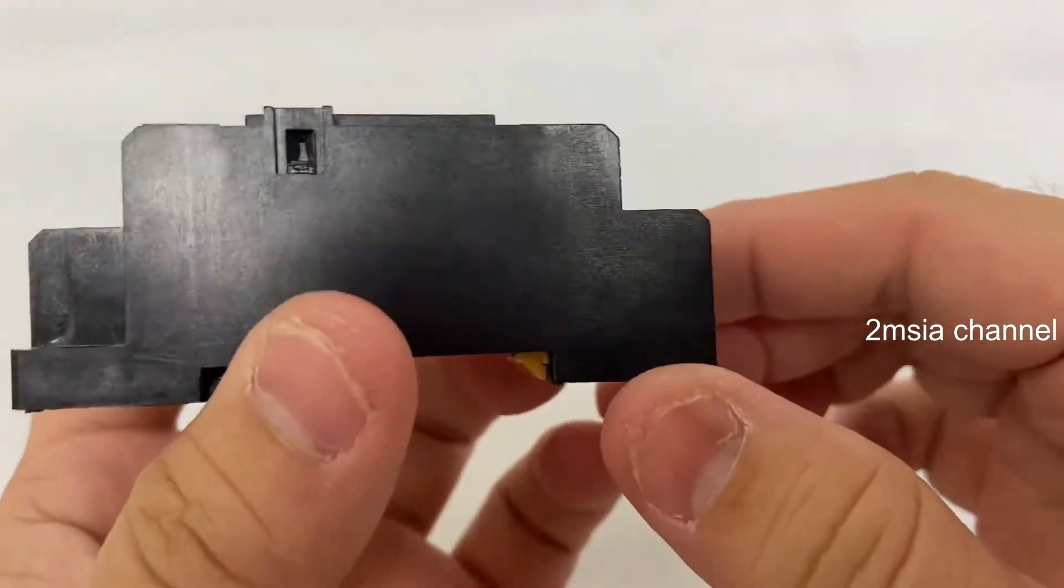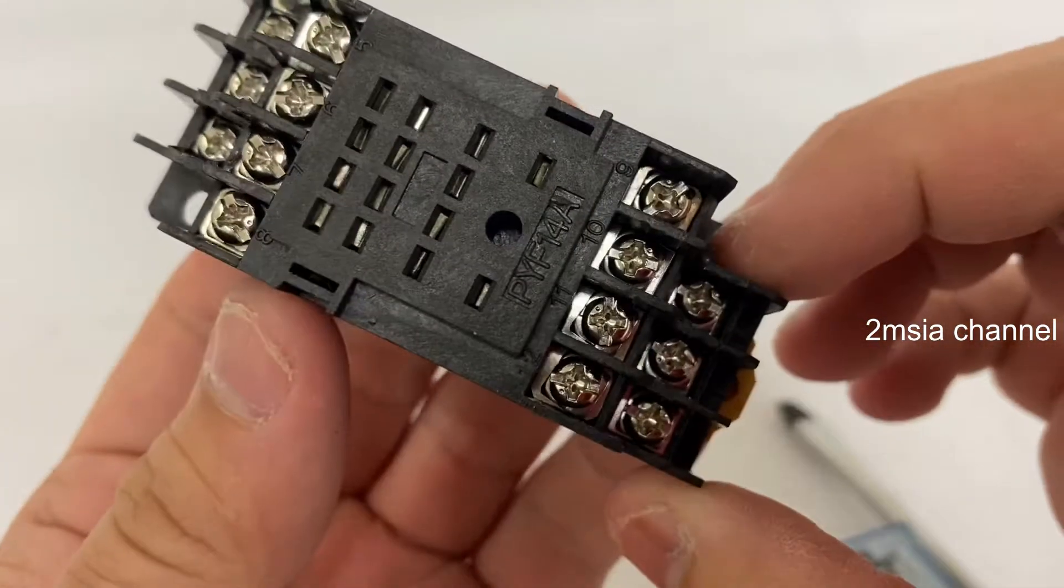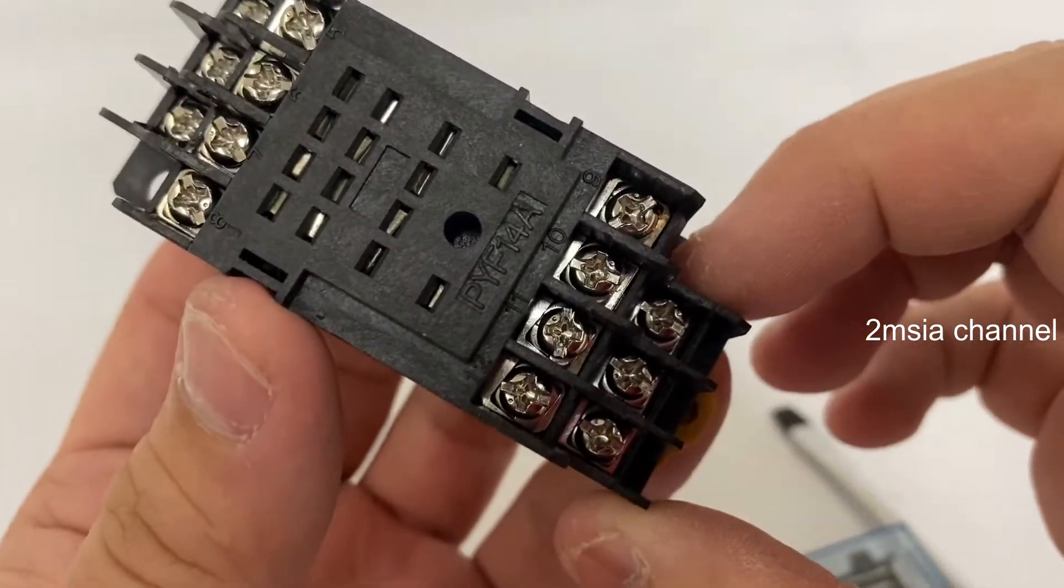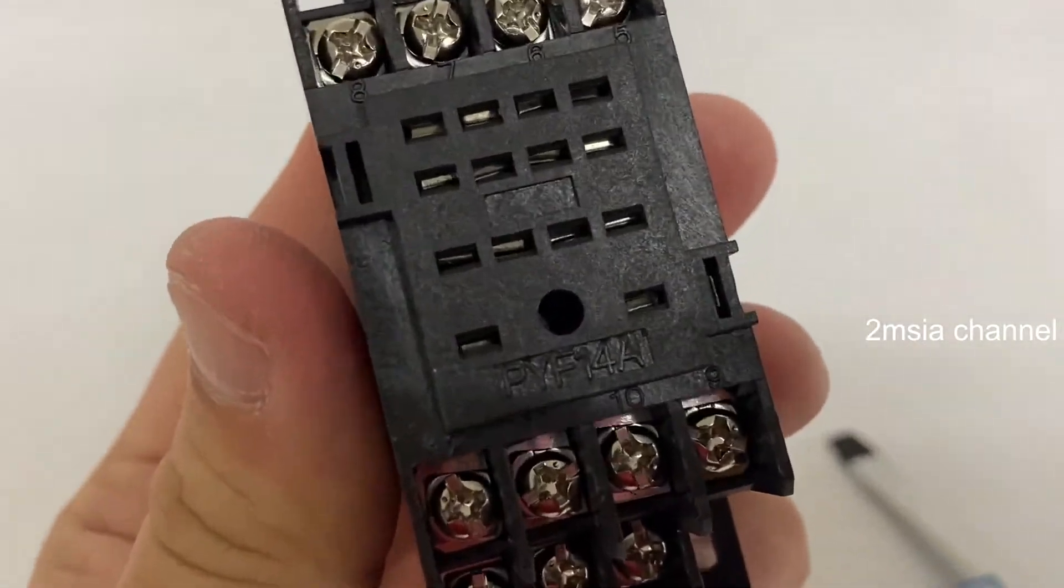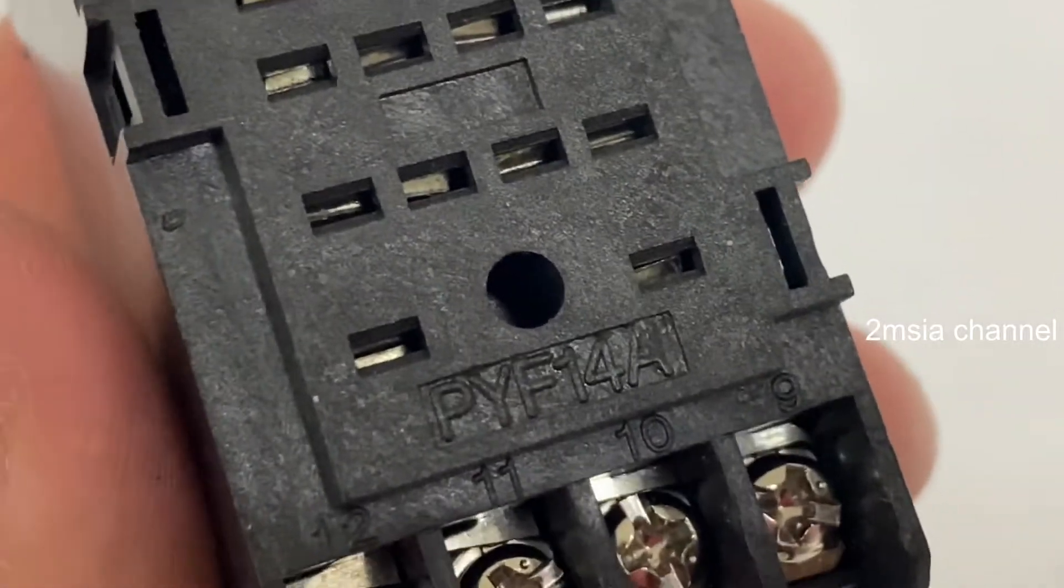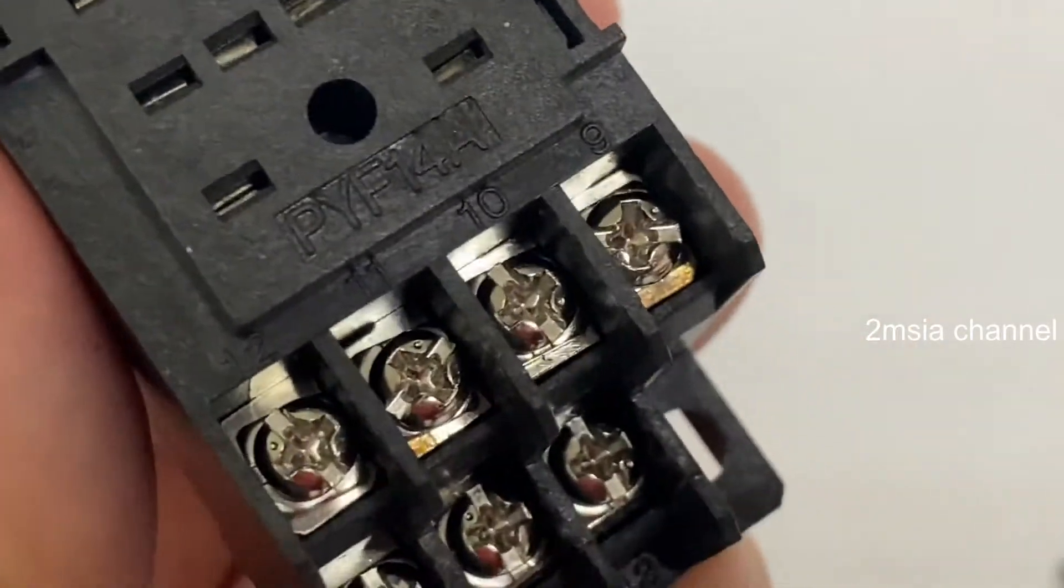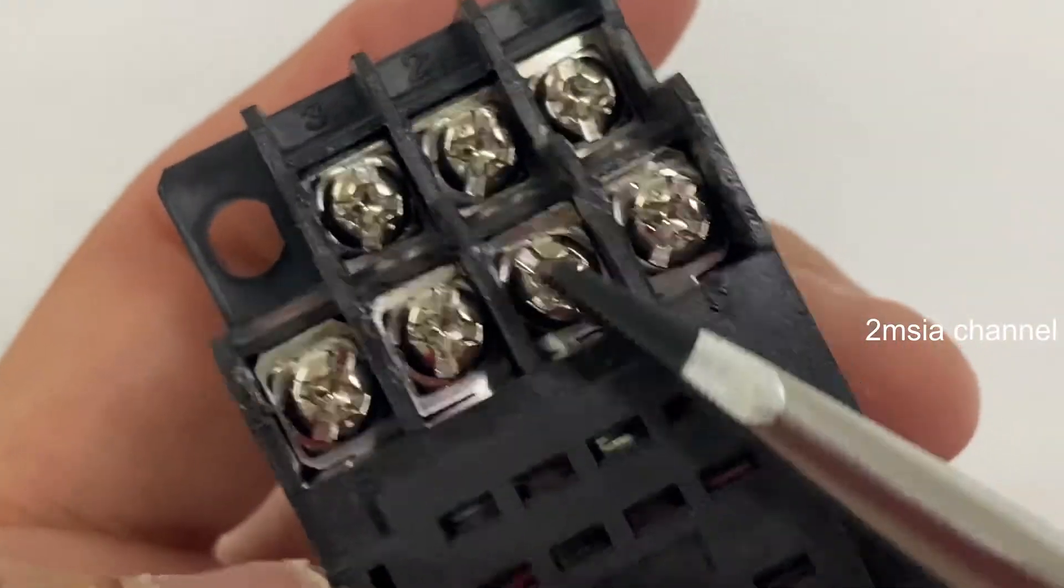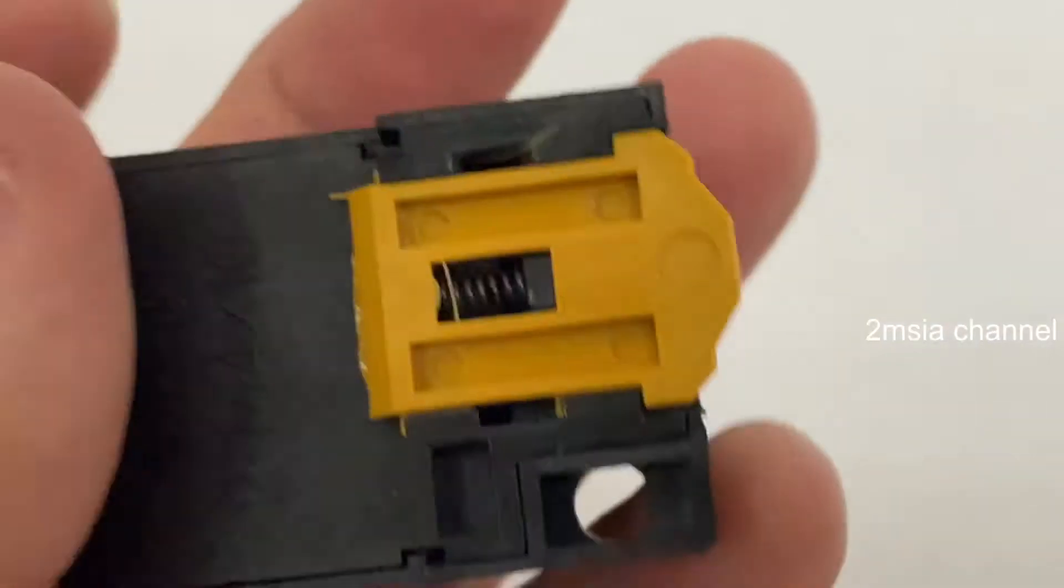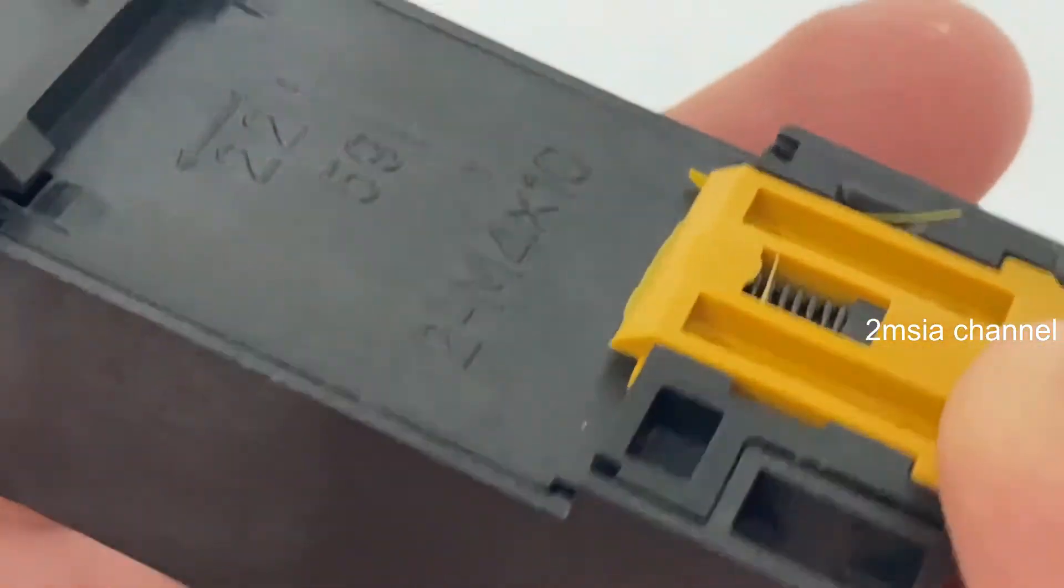Okay, this is the relay base. This is the code, can you see it? PYF14A, and they have a number ring over here. So this is the base and this is the code.